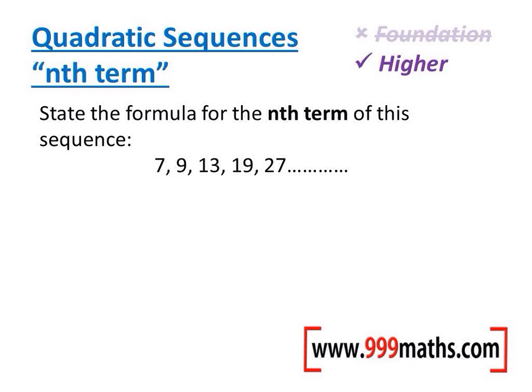The first thing about answering questions to do with quadratic sequences is to understand why they're not normal sequences. You can tell they're not normal sequences because the numbers go up by different amounts. In fact, from 7 to 9 it goes up by 2, 9 to 13 goes up by 4, 13 to 19 goes up by 6, and 19 to 27 goes up by 8. In a normal sequence, or an arithmetic or linear sequence, they will go up by the same amount.